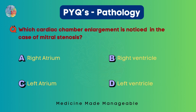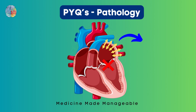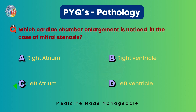Which cardiac chamber enlargement is seen in mitral stenosis? Right atrium, right ventricle, left atrium, or left ventricle? In mitral stenosis, blood from the left atrium cannot enter the left ventricle, causing blood to accumulate in the left atrium. To accommodate this volume, the left atrium enlarges — left atrial hypertrophy is seen. The correct option is option C.